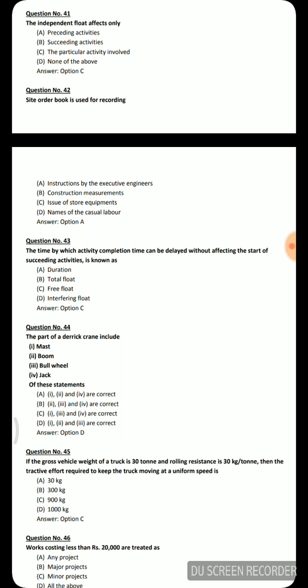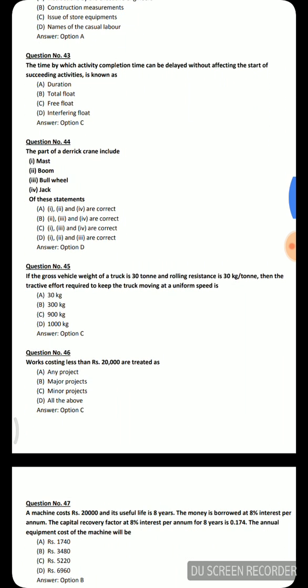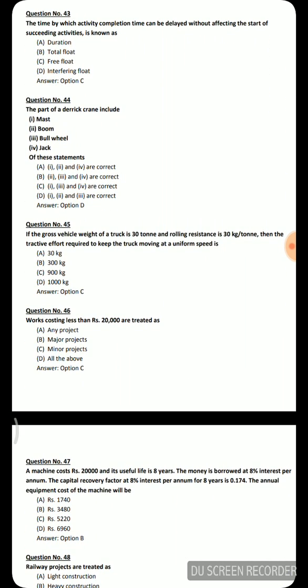Next question: site order book is used for recording — option A: instructions by the executive engineers, option B: construction measurements, option C: issue of store equipments, option D: names of the casual labor. The correct answer is instructions by the executive engineers. When an engineer visits the site, the instructions given are written and recorded in the site order book.